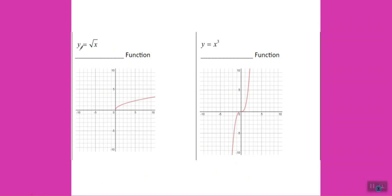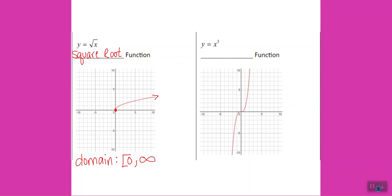Our next function is the square root function. This function is special because it doesn't have two arrows. It has an endpoint at (0, 0) and then an arrow going to the right. The reason it has an endpoint is because we can't take the square root of a negative number and have it be a real number, and we only see real numbers on this graph. So this one has a restricted domain because the input has to be 0 or greater. Our range starts at the endpoint of 0 and goes up forever.